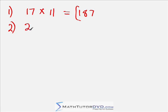What about 25 times 11? What would that equal? Your time starts now. All right. 2 plus 5 is 7. So we just sandwich that between the 2 and the 5. 275.